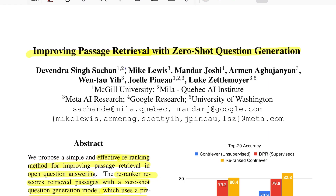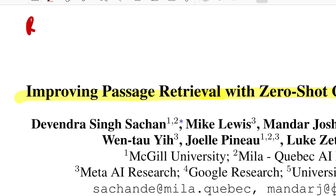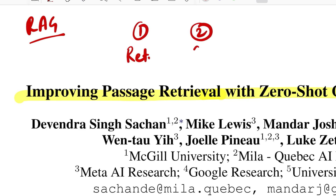The problem statement they're trying to solve is: let's say you have a RAG system wherein you essentially have two steps — the first is the retriever part, the second is the generation part. They're trying to improve the retriever aspect by incorporating a sub-step, which is a re-ranking step.